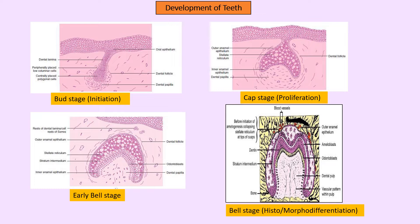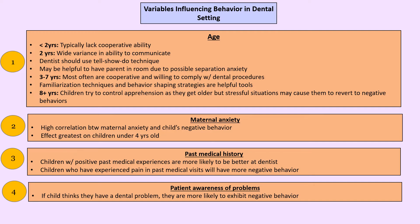As per age, there are variable influences on child behavior in the dental setting. Children younger than two or three years lack cooperative ability. Between two to three years you have a wide range — you can start doing tell-show-do with them. From three to seven years most children are cooperative; familiarization and shaping techniques work very well. Maternal anxiety has the highest influence on child behavior, especially until age four, so the parental anxiety scale is also very important to assess.